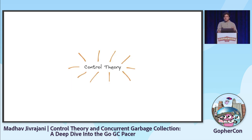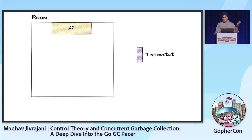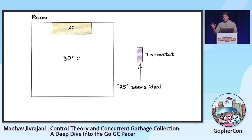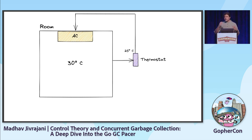So control theory — let's start with a brief introduction. Before formalizing things, let's take an intuitive example. Let's say we have a room with an air conditioner that controls the temperature, and a thermostat that controls the air conditioner. The temperature is currently 30 degrees Celsius, and we'd like it to be 25 degrees Celsius. We tell the thermostat that 25 degrees Celsius seems ideal, so let's try and maintain that.